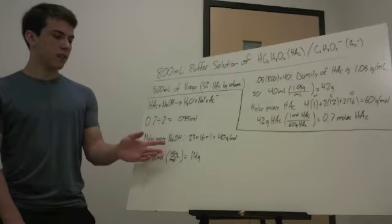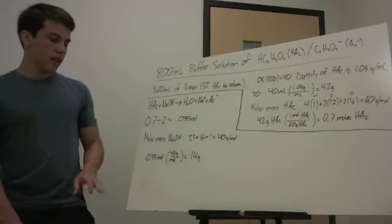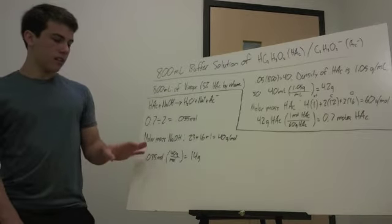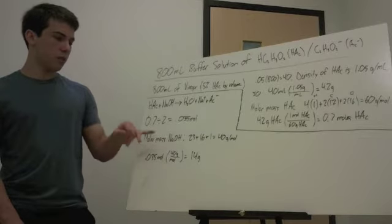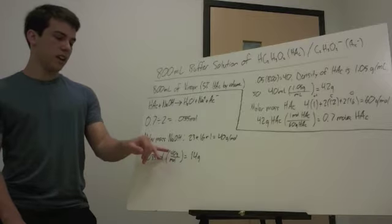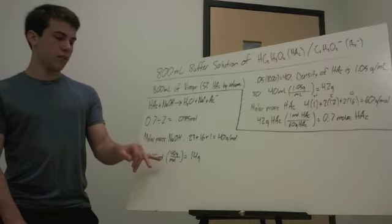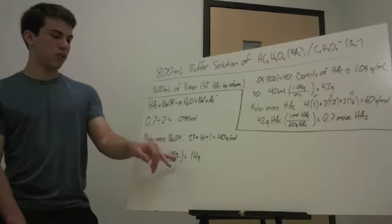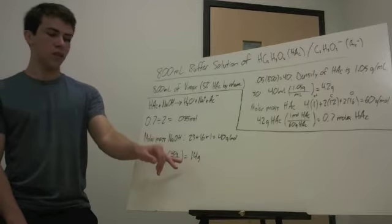So, we need a molar mass of NaOH, 40 grams per mole. You then take the moles of the acid you want to react and multiply it by 40 grams per mole of NaOH to get 14 grams of NaOH.